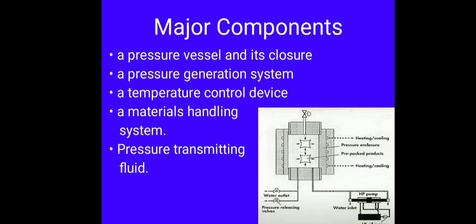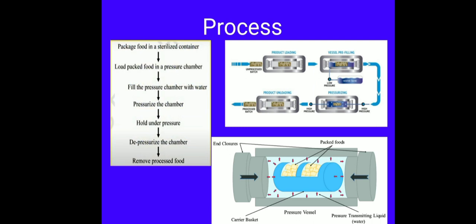Now, let us talk about the process involved. The packaged food in sterilized container is loaded into the pressure chamber. Then the vessel is filled with water as we can see in the image, and we will keep on filling the water until the desired pressure is achieved. We will hold that food product in the pressure, then depressurize the chamber and remove the processed food. So, this is the whole process involved and the picture at the bottom depicts the basket, how the food is carried in the basket and how the pressure is applied.